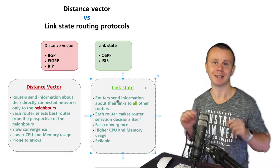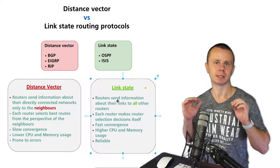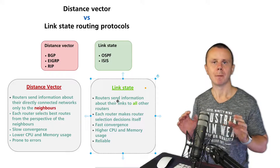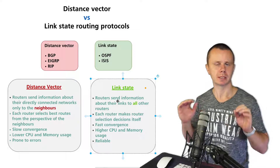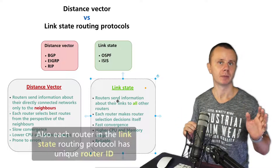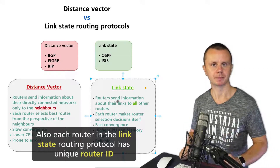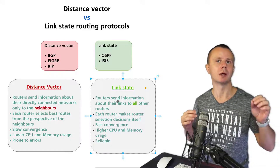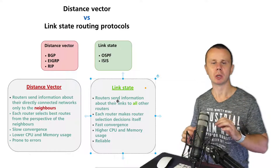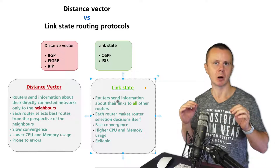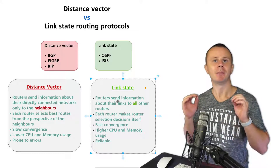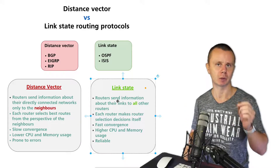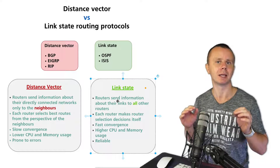In link state routing protocols, routers send information about their links to all routers in the autonomous system — that is the main difference from distance vector. A specific router advertises all its links, including IP addresses and masks, and this information is flooded through all neighbors to every router in the autonomous system. Once all routers have information about all links, they can make their own routing decisions and select the best routes to every destination network.